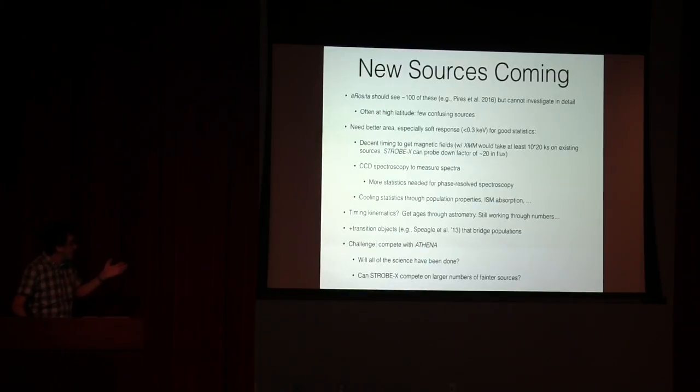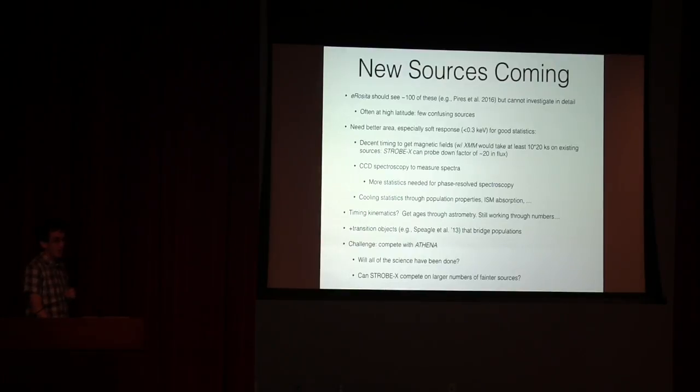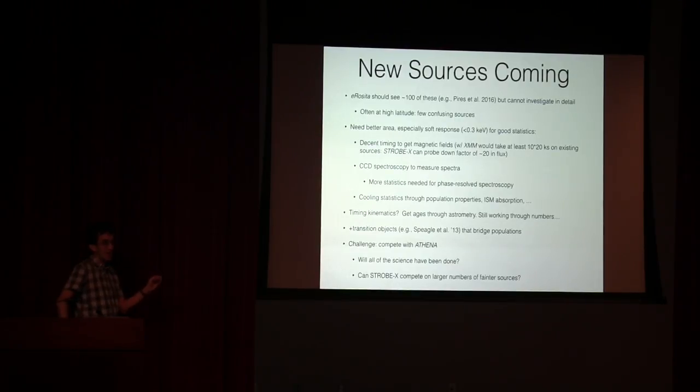Another potential thing that Strobe X may make possible is these objects are very nearby, they have very high proper motions. It may be possible over a five plus year baseline for the mission to do some proper motion measurements using x-ray timing. It certainly won't be possible using imaging and astrometry, and I have to run the numbers to make sure it makes sense for objects with these long spin periods. But that would be another way to get kinematics that gives you some indication of the kinematic ages. You can trace them back to potential birth locations, get ages, and you can then combine with their cooling properties.